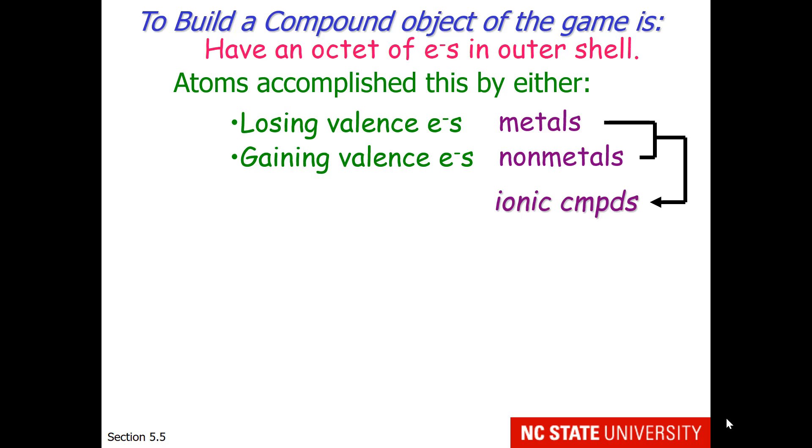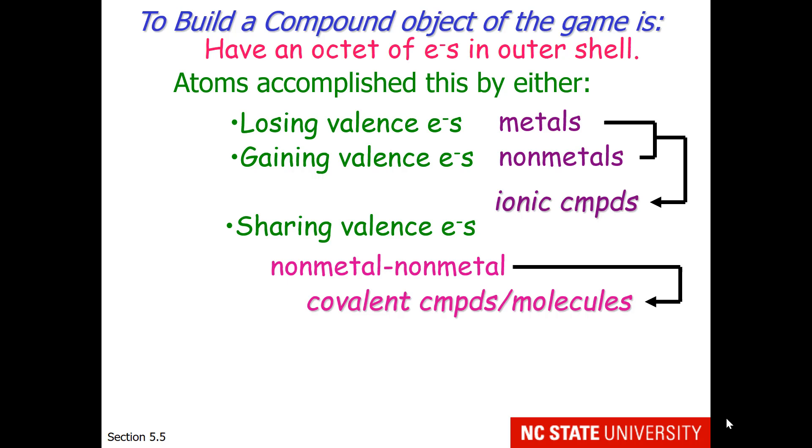In doing so, they are isoelectronic with the noble gases. Noble gases have eight electrons around them. That's where the idea of the octet rule comes from. Another way you can build compounds is by building molecular compounds. These are formed between non-metals, and each atom reaches an octet by sharing valence electrons.